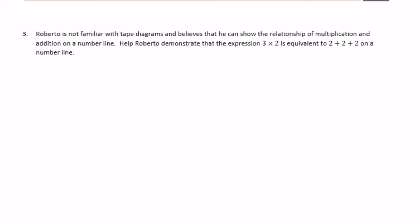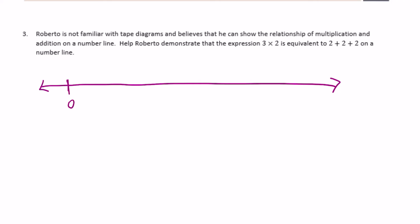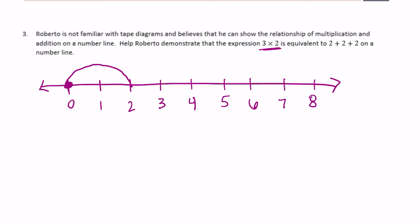Number three: Roberto is not familiar with tape diagrams and believes he can show the relationship of multiplication and addition on a number line. Help Roberto demonstrate that the expression three times two is equivalent to two plus two plus two on the number line. I'm going to draw a number line starting at zero, going up to eight. We want to show three groups of two.